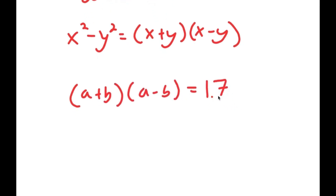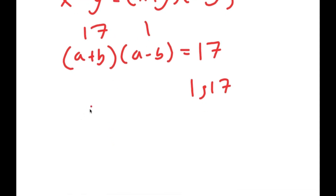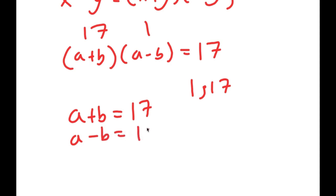The only factors of 17 are 1 and 17, meaning one of these two factors has to be 17 and the other has to be 1. Since a plus b is greater than a minus b, we can tell that a plus b is going to be 17 and a minus b is going to be 1. So I have two equations: a plus b equals 17 and a minus b equals 1.